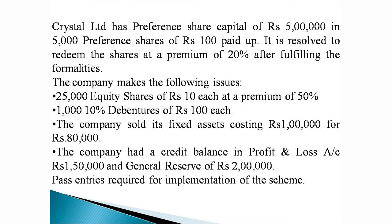The company sold its fixed assets costing Rs. 1,00,000 for Rs. 80,000. The company had a credit balance in profit and loss account of Rs. 1,50,000 and general reserve of Rs. 2,00,000. Pass entries required for the implementation of the scheme.